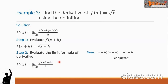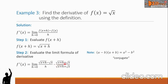Recall the special product formula: a minus b times a plus b equals a squared minus b squared. These factors are conjugates of one another. To remove the radical, we multiply our fraction by another fraction whose numerator and denominator is the conjugate of our numerator — that is, the square root of x plus h plus the square root of x.